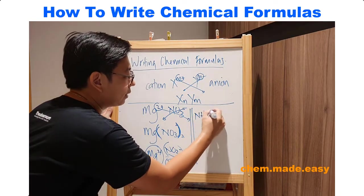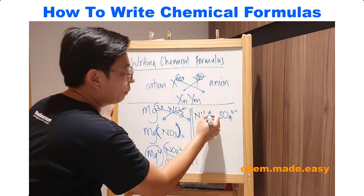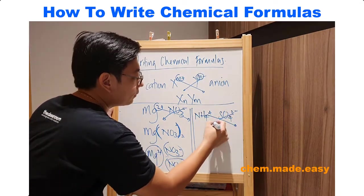So a polyatomic cation, NH4+, and sulfate is SO4 2-. You want to take the numbers and cross it down.